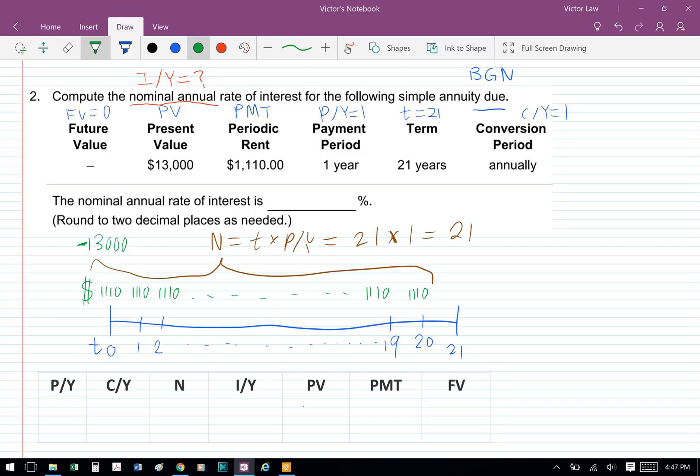From a timeline perspective, basically we're making 21 payments of $1,110 starting from T equals to 0. And then also for the present value, notice that we have negative $13,000.